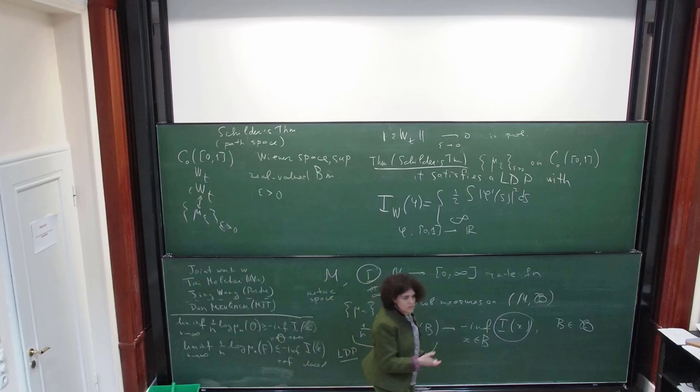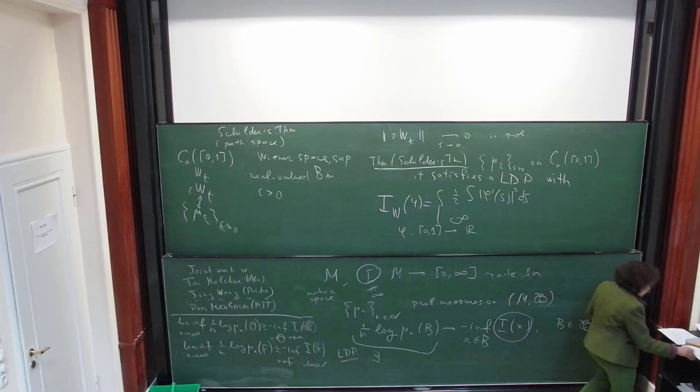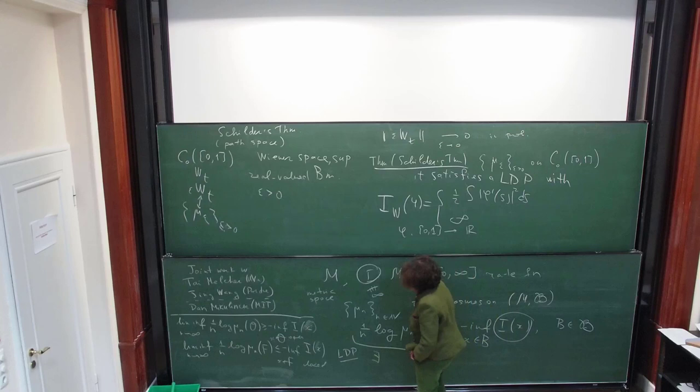We know that we can find the rate function explicitly only if we plug in normally distributed IIDs. How do we connect Cramer's theorem and Schilder's theorem? You can try to take some kind of limit — approximate Brownian motion by random walks — and hope that things survive. And it actually works. This gives you a different argument to prove the large deviation principle for Brownian motion.